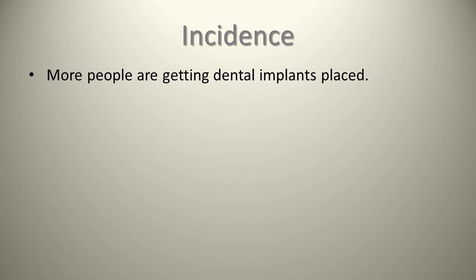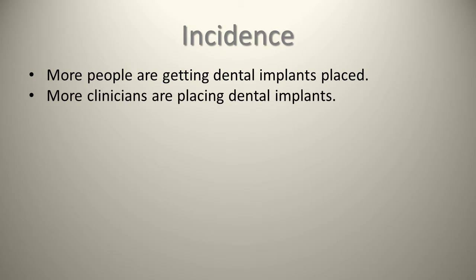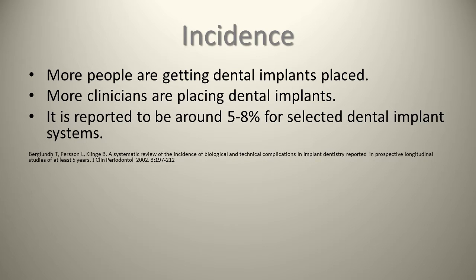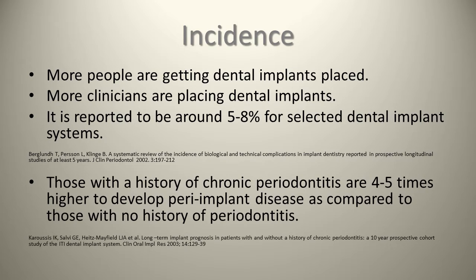The incidence of peri-implant disease is increasing. Some people think peri-implant diseases are minor and occur rarely, but as more people are getting dental implants placed and more clinicians are placing them with varying degrees of skill, this is changing. It's reported to be around five to eight percent for selected dental implant systems, per a 2002 study by Berglund and Pearson-Kling in the Journal of Clinical Periodontology. Those with a history of chronic periodontitis are four to five times more likely to develop peri-implant diseases, per Carusis 2003.